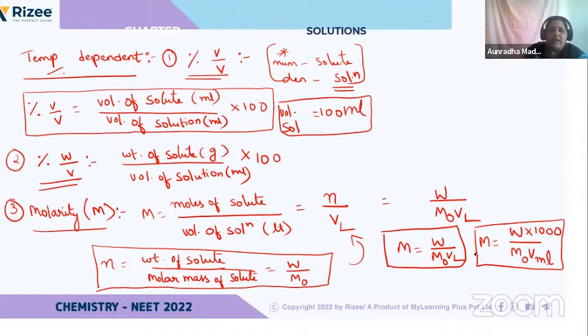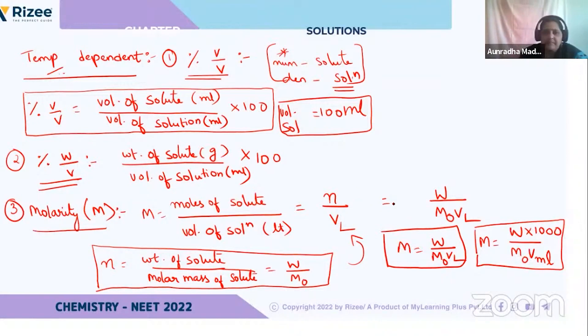Note carefully: M denotes molarity, while M₀ denotes molar mass. See the difference between those letters.